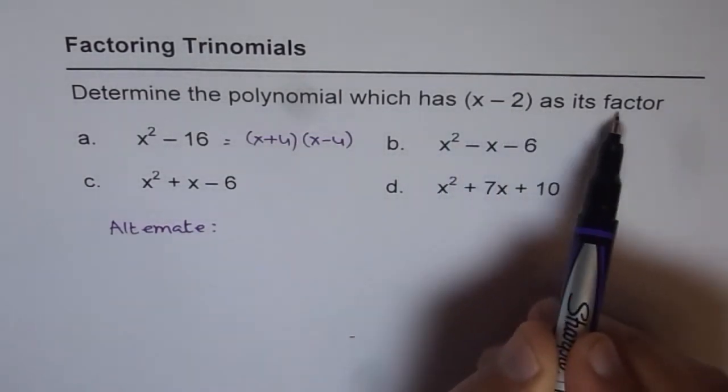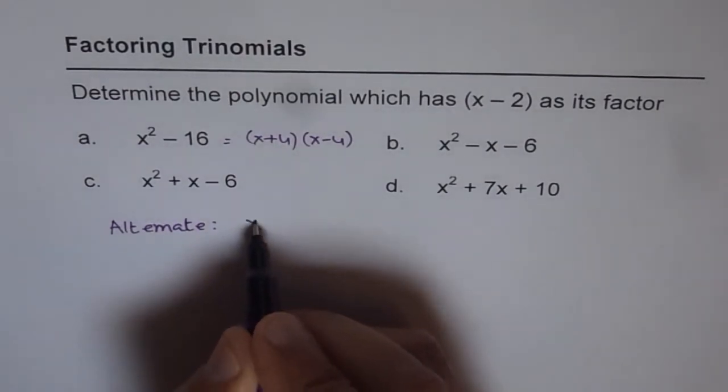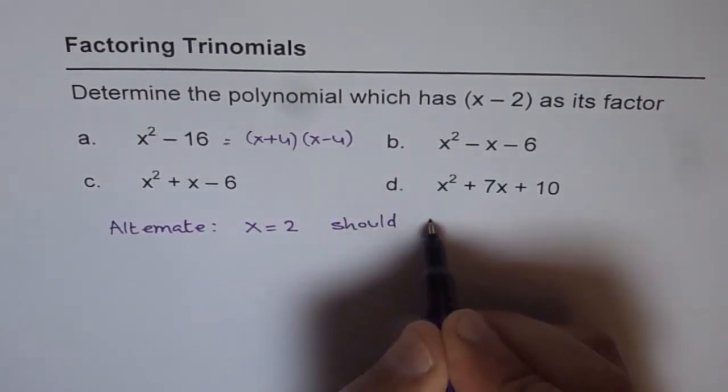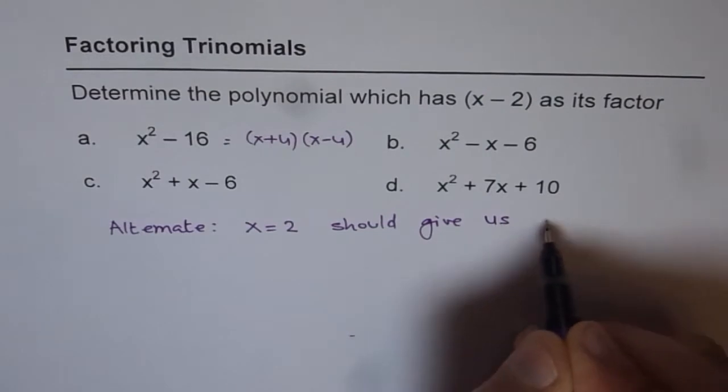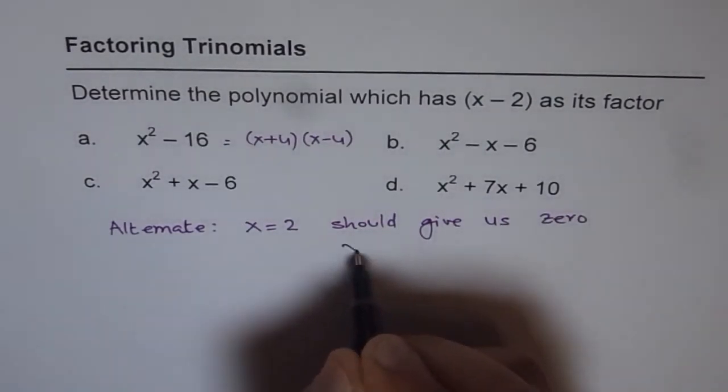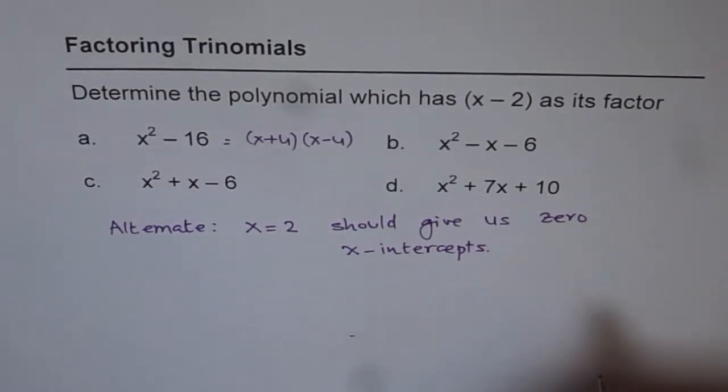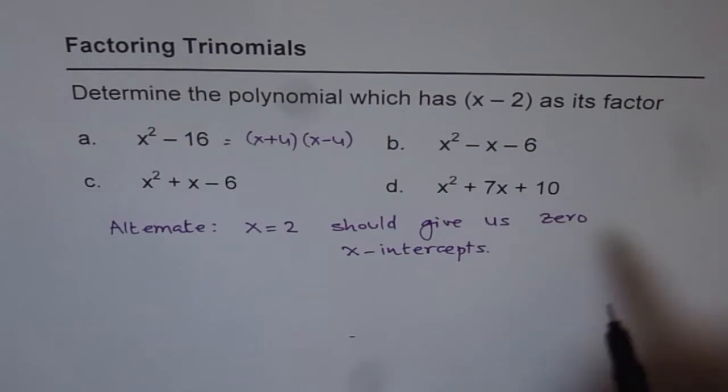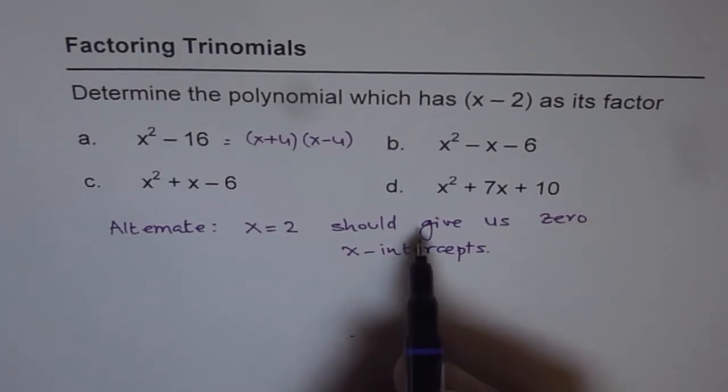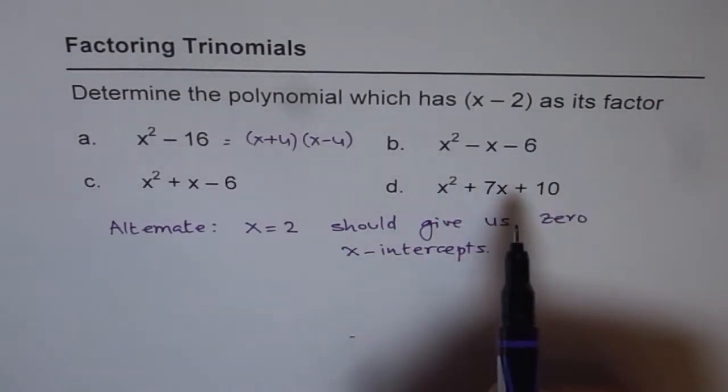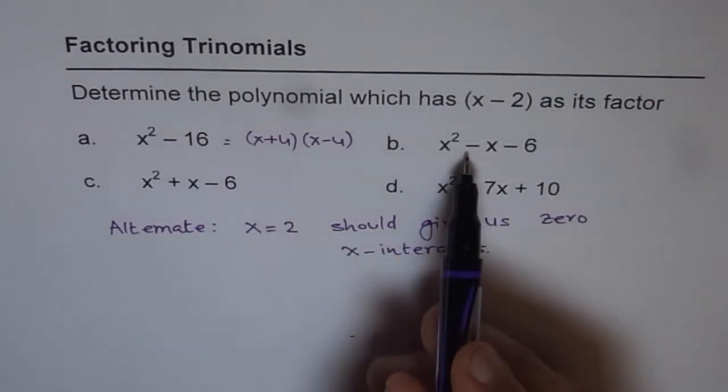So if x minus 2 is a factor of the polynomial, then x equals to 2 should give us 0, right? That is also a way to find x-intercepts. So at times, we can frame this question as to figure out whether do we have x-intercept at x equals to 2 or not. So we can adopt this method also to check if given polynomials have x minus 2 as a factor or not. That means we'll substitute x equals to 2 and then figure it out.